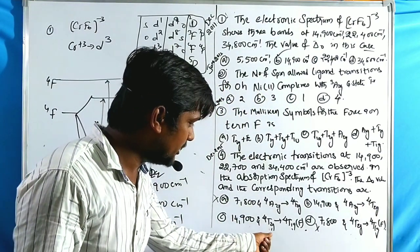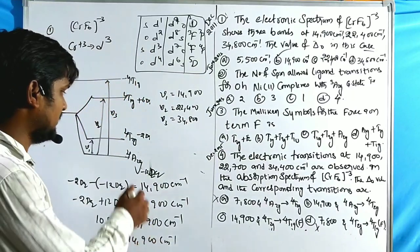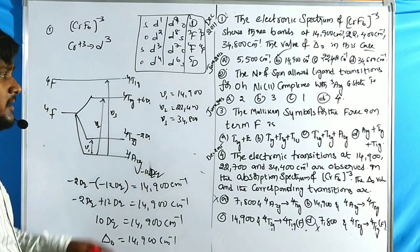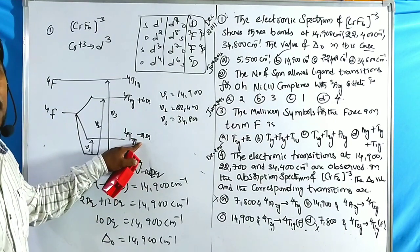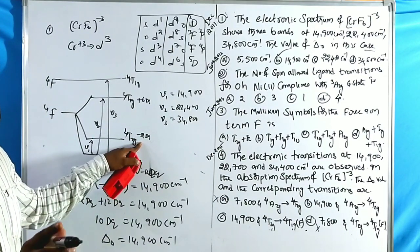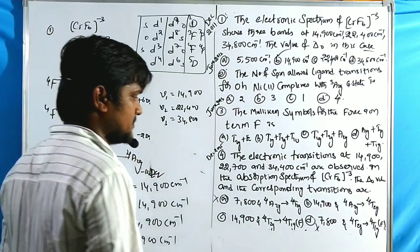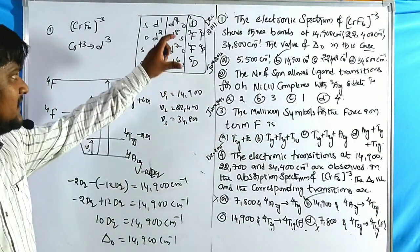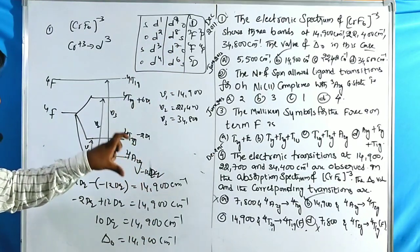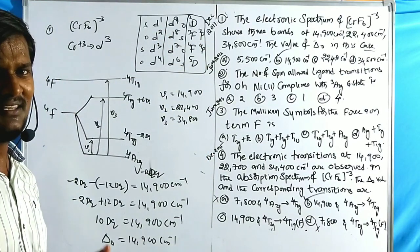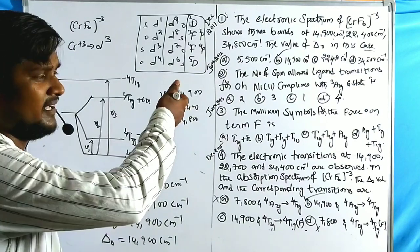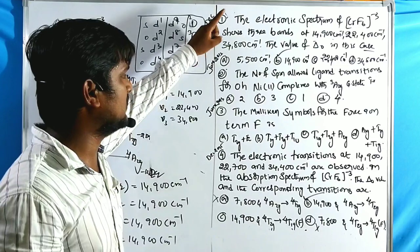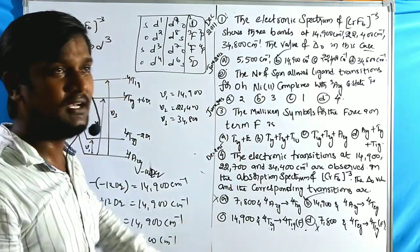The first transition for similar-to-octahedral d3 is ⁴A₂g → ⁴T₂g, which equals ΔO. The transition ⁴T₂g → ⁴T₁g corresponds to 6Dq − (−8Dq) = 14Dq, not 10Dq, so it doesn't give ΔO. Therefore the correct option is B, with transition ⁴A₂g → ⁴T₂g giving ΔO = 14,900 cm⁻¹.